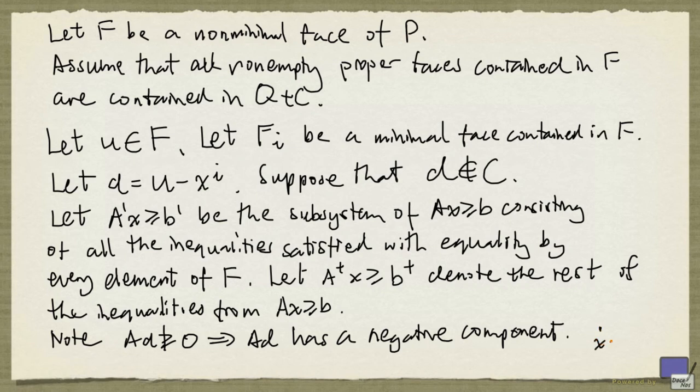Well, we have Xi and U both lying on the face F, and this is the vector D. So if we start at Xi and move in the direction of D, we'll eventually hit U. But if we continue to move in the direction of D, we'll eventually come to a point where one of these inequalities will be violated if we continue any further. And say that point is Xi plus lambda D.